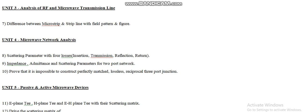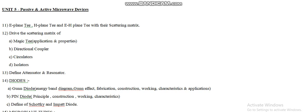Moving on to question number nine, that is impedance, admittance, and scattering parameters for the two-port network. We will first describe the scattering parameters for the two-port network, then analyze its impedance and admittance characteristics. According to question number ten, we need to prove that it is impossible to construct a perfectly matched lossless reciprocal three-port junction. This is a most important question and it also appeared in the Microwave Theory 2019 examination, so prepare it very well.